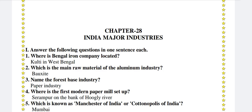Chapter 28: India Major Industries. Answer the following questions in one sentence each. Where is Bengal Iron Company located? Kulti in West Bengal. Which is the main raw material of the aluminium industry? Bauxite.